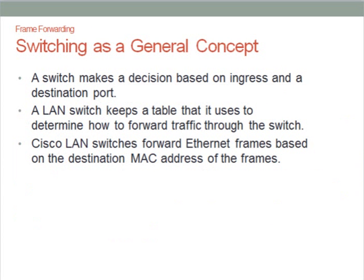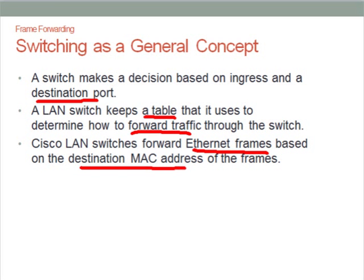The switch works in the following ways: it makes a decision on how to transfer the message from the source port to the destination port. The LAN switch keeps a table that allows it to decide how to forward the traffic through the switch. The Cisco LAN switch will forward Ethernet frames based on the destination MAC address of the frames.